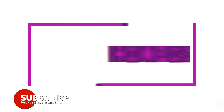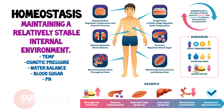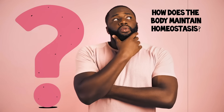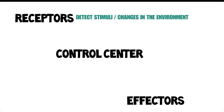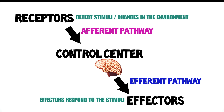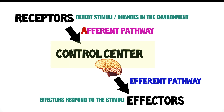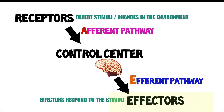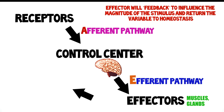The body is in a dynamic state of equilibrium. Chemical, thermal, and neural factors interact to maintain homeostasis — which is maintaining a relatively stable internal environment. Our control mechanisms include receptors that detect and respond to changes in the environment or stimuli. A control center determines if the set point is on target. The control center can send a message to an effector to respond to the stimuli. The order is: a stimulus is detected by a receptor, the signal travels along the afferent pathway to the control center, then the message is sent via the efferent pathway to the effector. The effector feeds back to influence the magnitude of the stimulus and return variables such as body temperature to homeostasis.